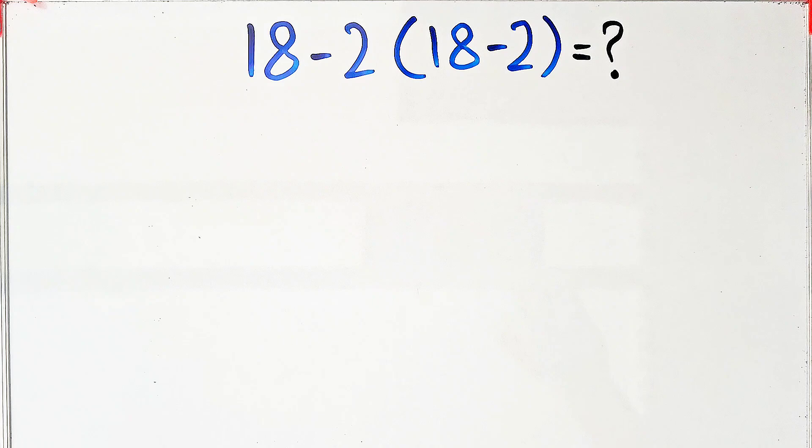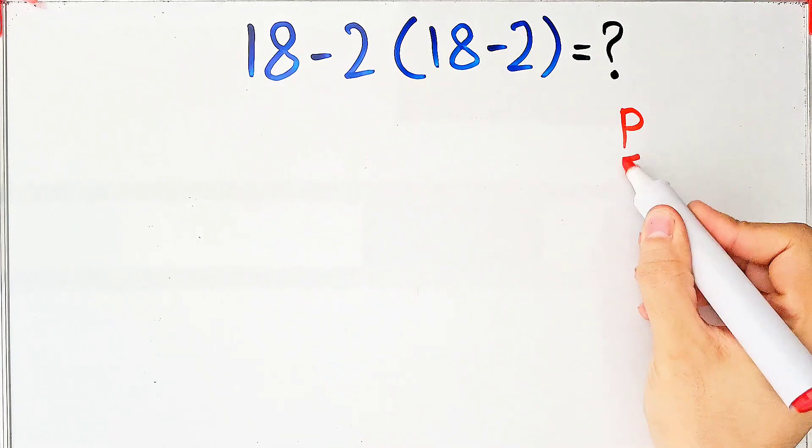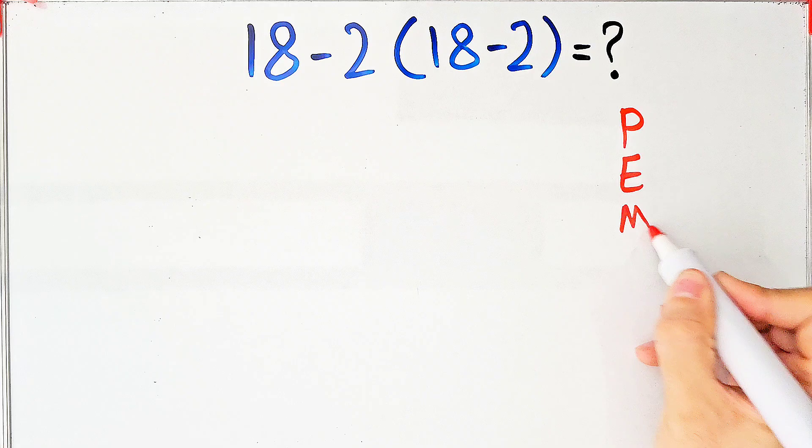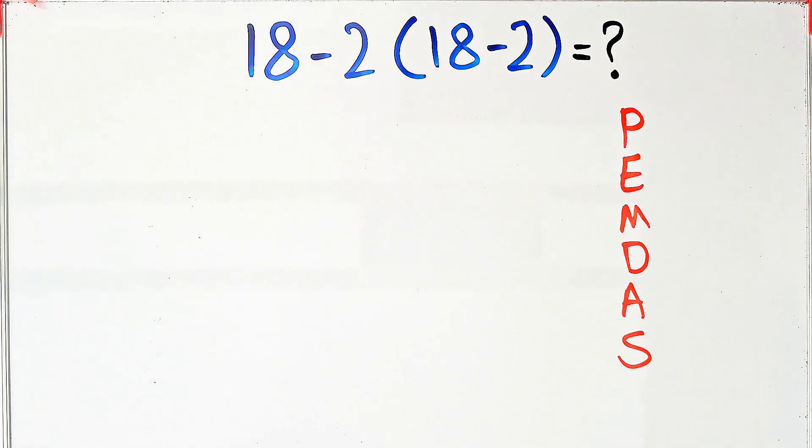Let's solve this question step by step together. To solve this question, we need to follow the order of operations which is PEMDAS. PEMDAS shows the priority of the mathematical operations. If you don't pay attention to this rule, you get the wrong answer.